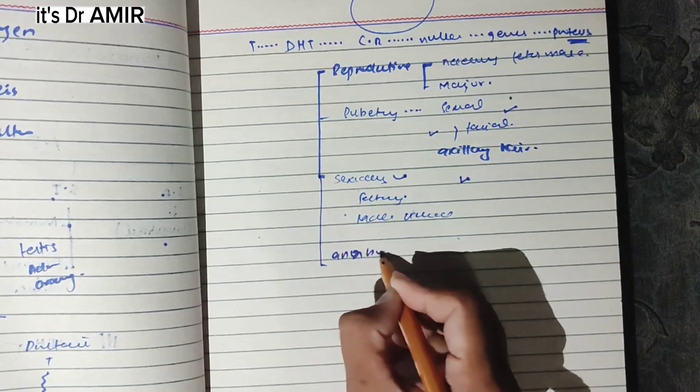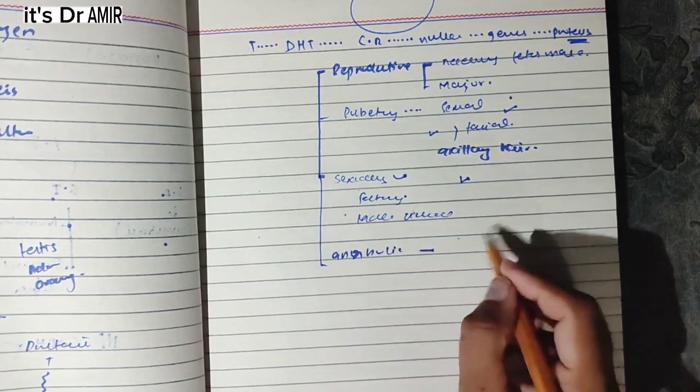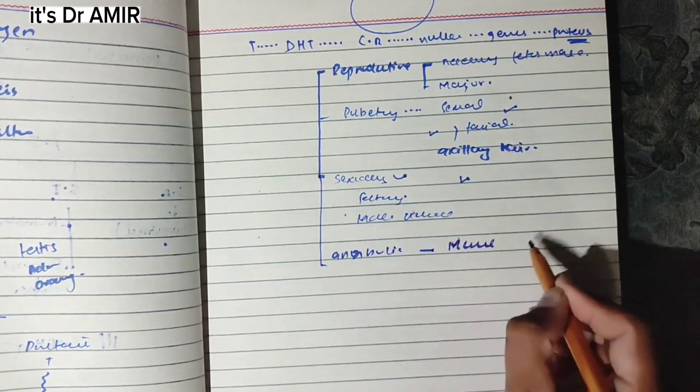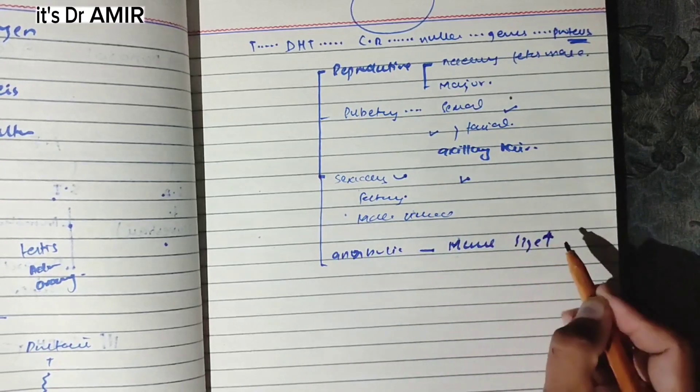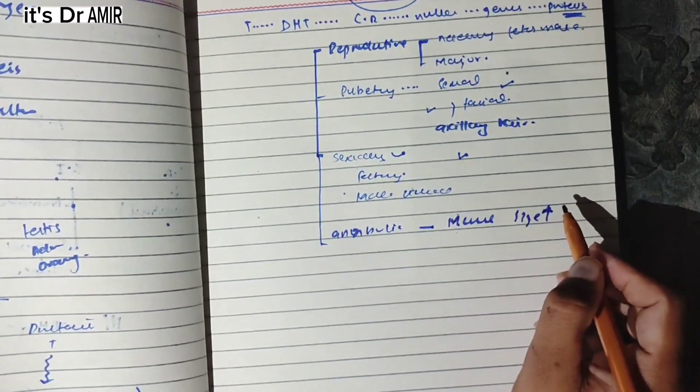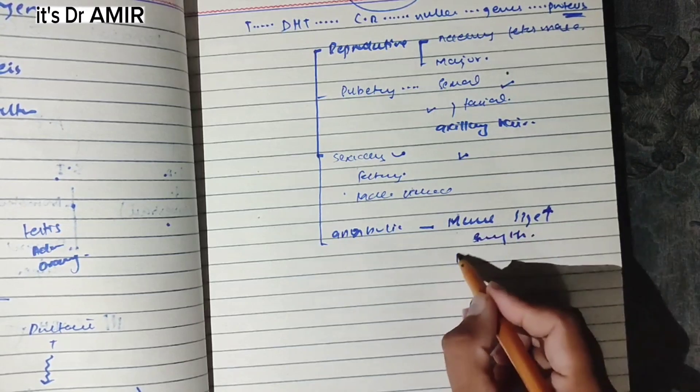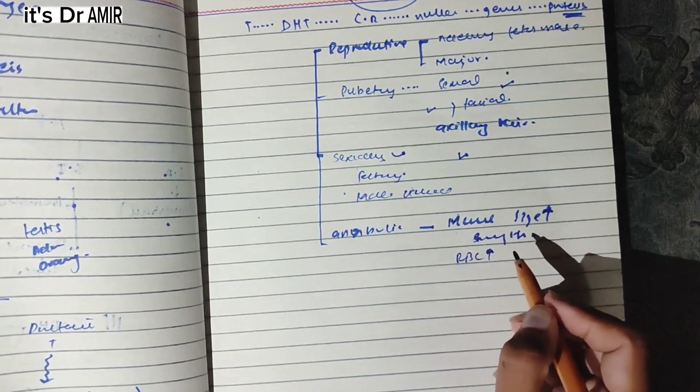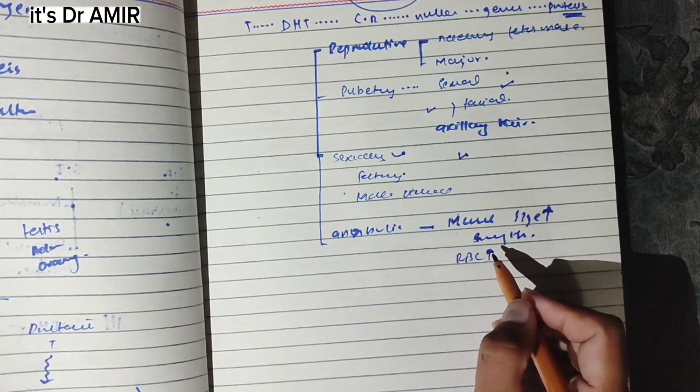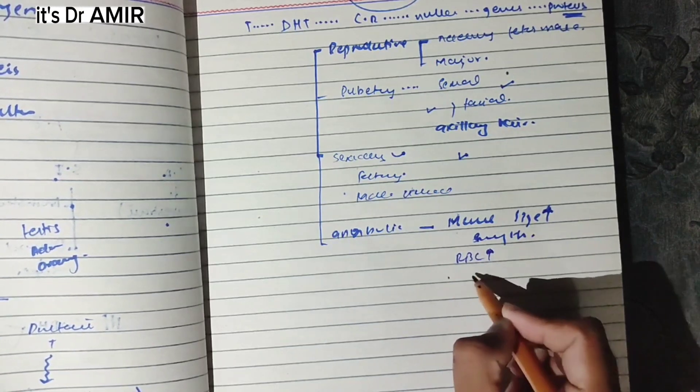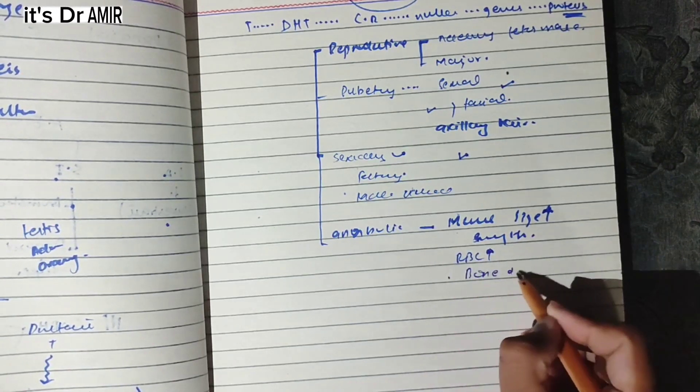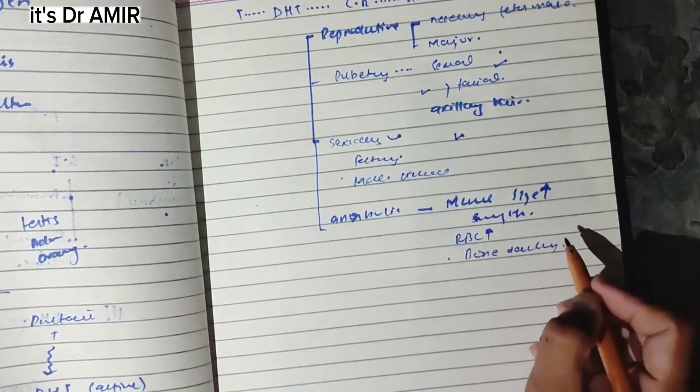Anabolic role involves increasing muscle size. This is why athletes use it for muscular size, strength, and muscle strength. It can also be given in anemia and to maintain bone density.